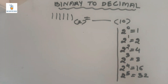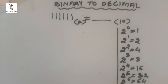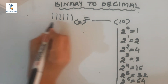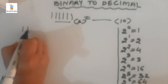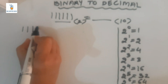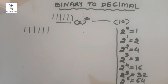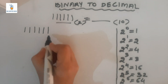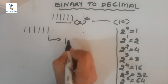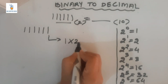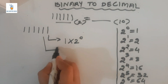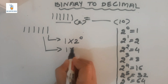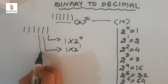Here we are taking 6 digits: 111111 to the base 2 is equal to what in base 10? Beforehand I have written on the right side the weights of 2 and their equal values: 2 raised to 0 is 1, 2 raised to 1 is 2, 2 squared is 4, 2 cubed is 8, 2 raised to 4 is 16, 2 raised to 5 is 32, and 2 raised to 6 is 64. First, we note down the binary number and start noting the weight from right to left, multiplying each digit by its weight.